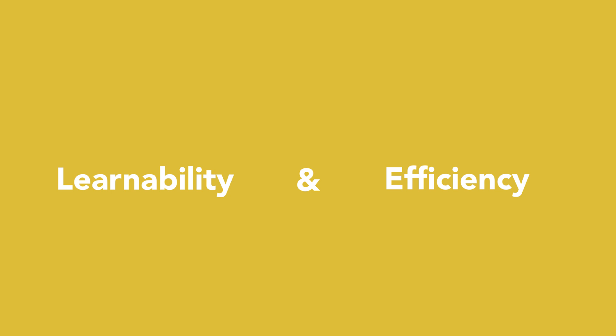Learnability and efficiency are frequently confused or used interchangeably, and though they're related, they're different. Learnability considers how easy it is for users to accomplish a task the first time they encounter the interface, and how many repetitions it takes for them to become efficient at that task. Efficiency is about how quickly users can perform a task once they've learned it.